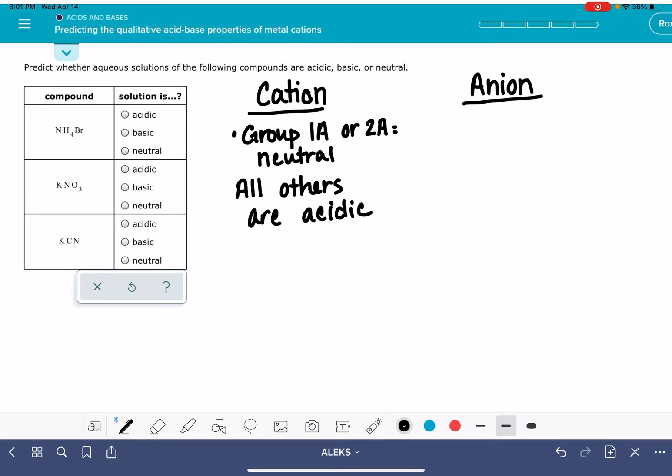Now for our anions, if our anion is the chloride ion, the bromide ion, the iodide ion, the nitrate NO3 minus ion, or ClO4 minus, if it's any one of those anions, the anion is going to be neutral. Now this is not saying that the whole compound is neutral. This is just saying that the anion is neutral.